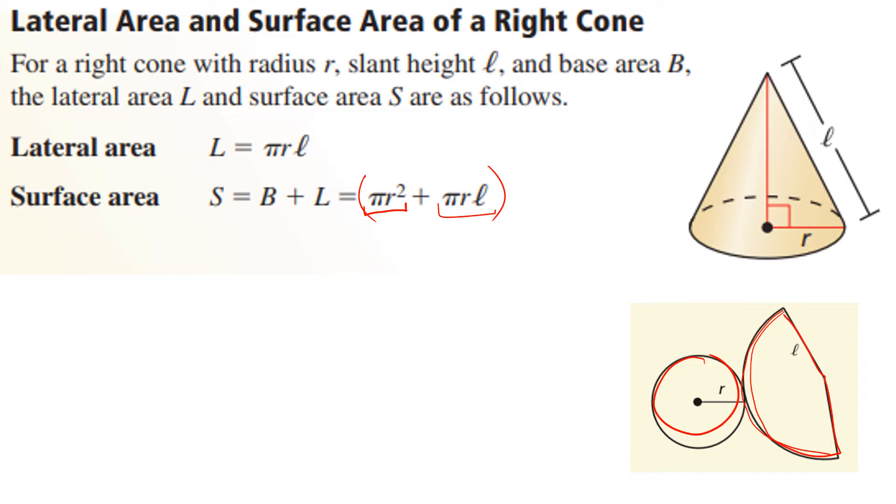Just make sure that you understand that the πr², that's the formula for the area of a circle that represents your base. πr times the slant height represents the sector, which is that lateral area. So we got the base area and we got the lateral area.